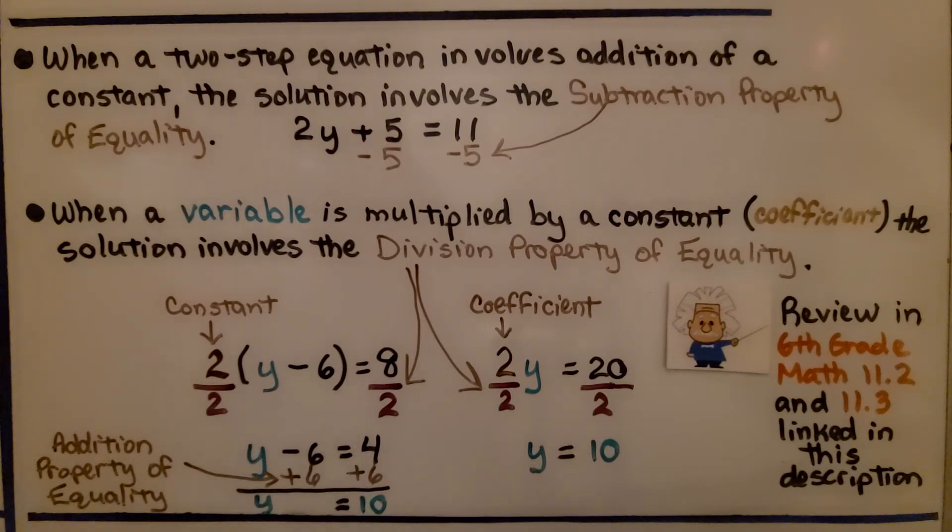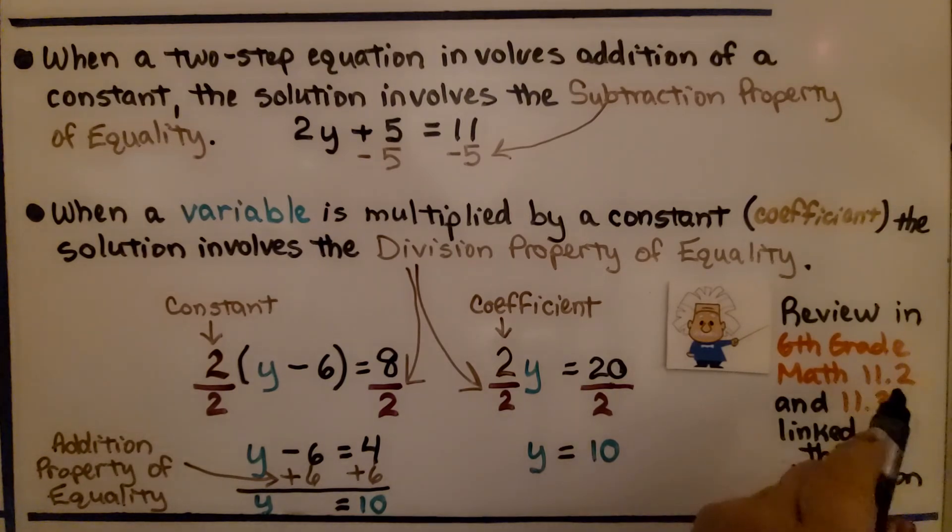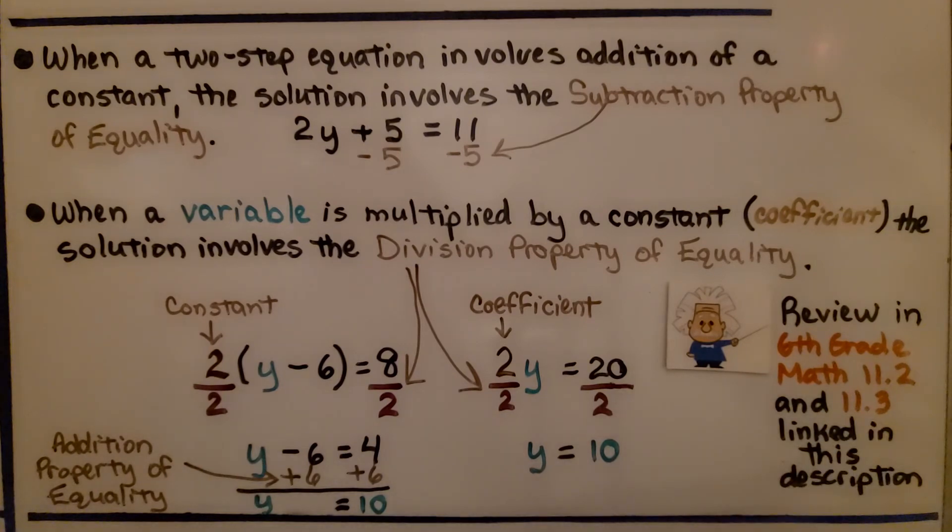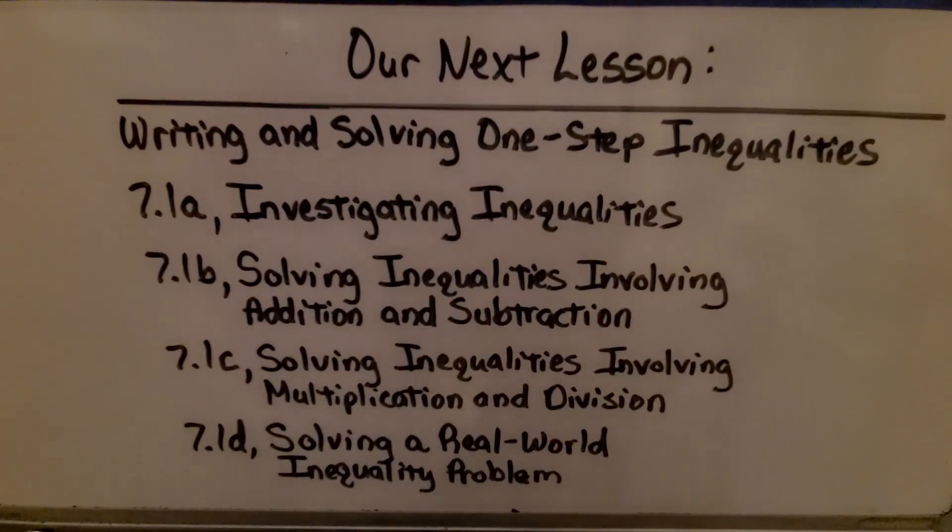Now we learned these properties of equality back in 6th grade math. We learned about addition and subtraction in 11.2, and multiplication and division in 11.3. And those lessons are linked in this description. It's kind of hard to remember things that you learned a year ago. So, before we move on to the next lesson, you are going to want to review these because we're going to be talking about some more properties.